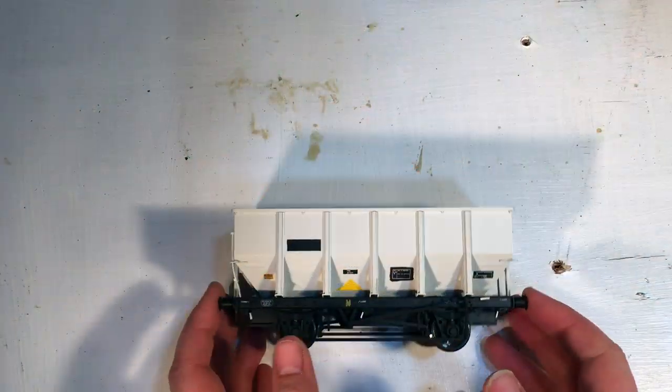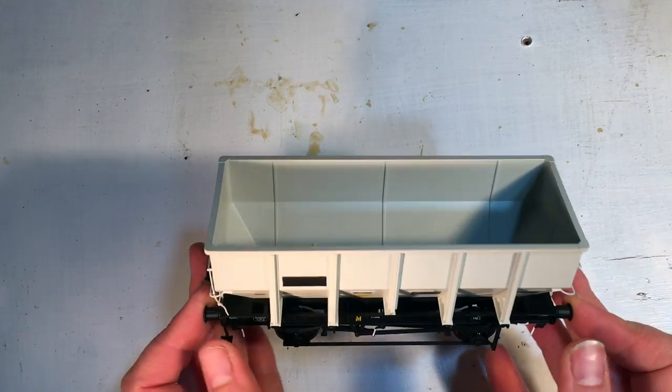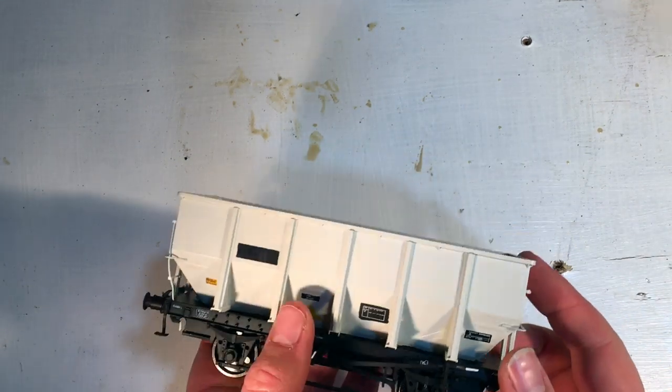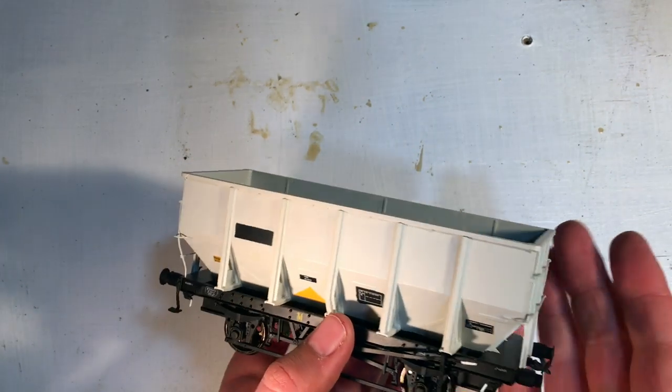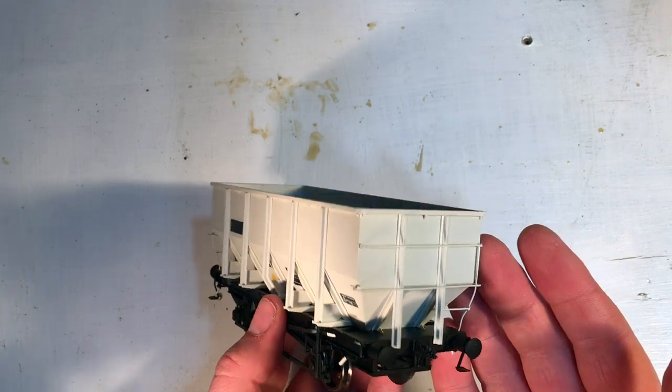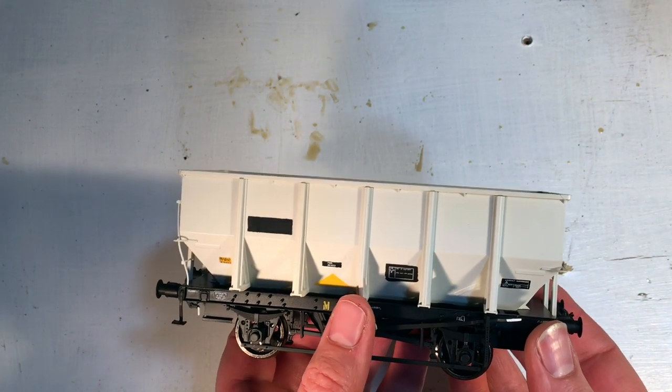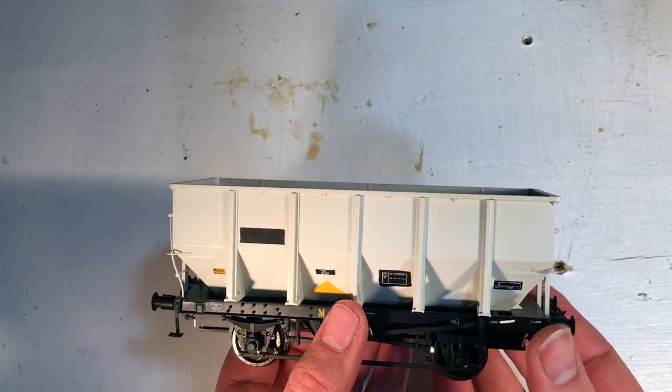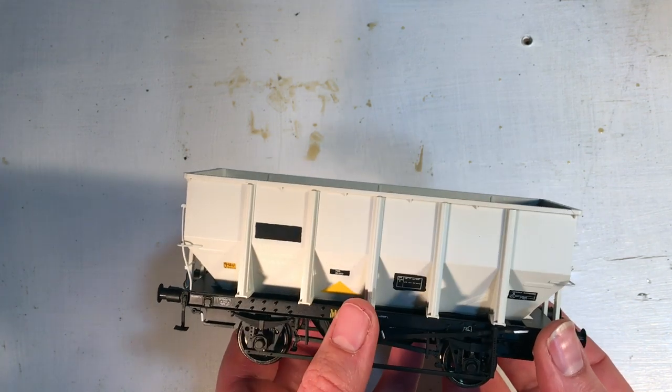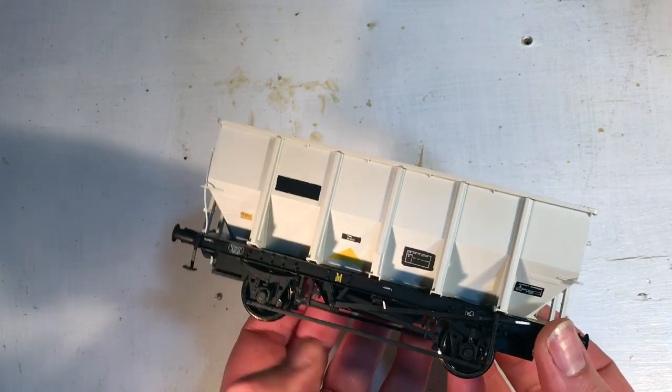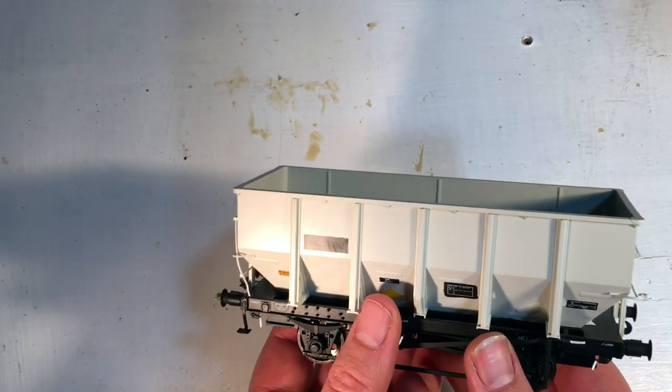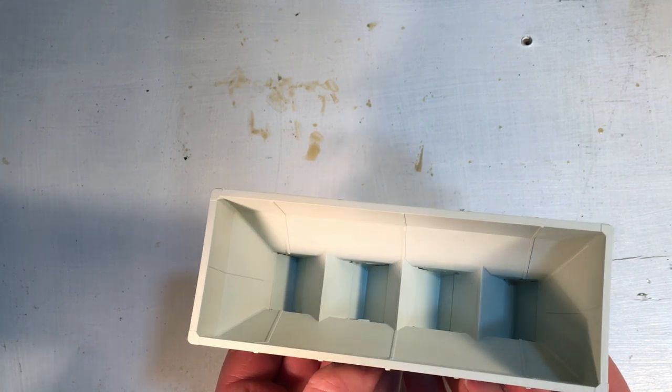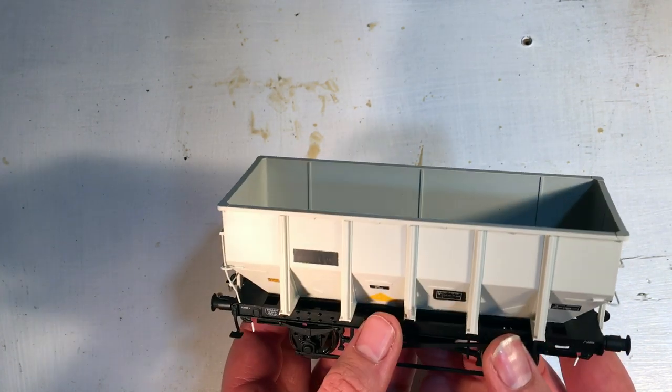This is the wagon in question, the Accurascale HUO O gauge wagon I've chosen to do. As you can see, it's a really great model but presented ex-works. Well, I don't remember seeing many of these, if any at all, ever in such a clean and nice condition. They presumably left the works looking like this but very quickly got dirty, deteriorated, and started to rust. Such was the hard life that wagons such as these lived.